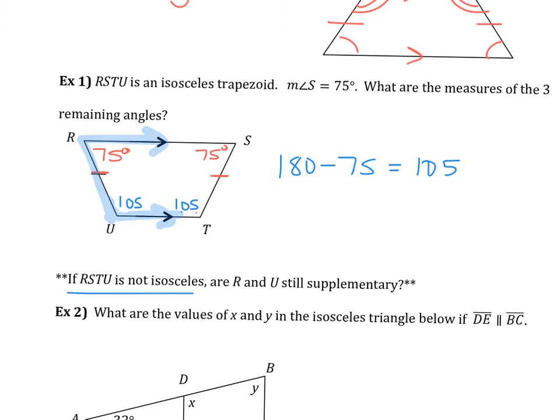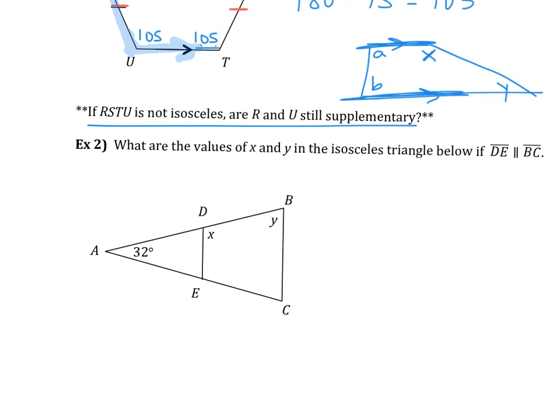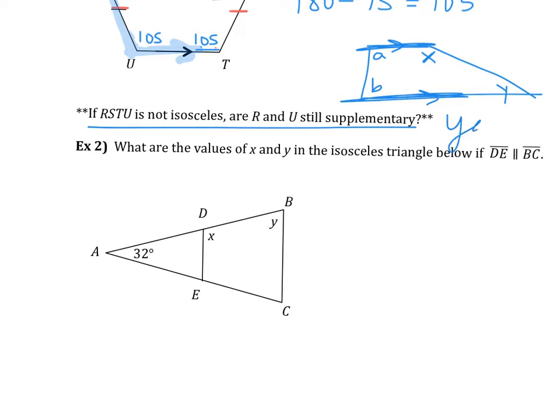And here's, I just told you the answer to this, but if it's not an isosceles trapezoid, are these two still supplementary? So if you had a trapezoid that looks like this instead, would X and Y be supplementary? Yeah. Would A and B be supplementary? Yes. So as long as they are same side interiors like that, they will still be supplementary. Every trapezoid will have two sets of supplementary angles.